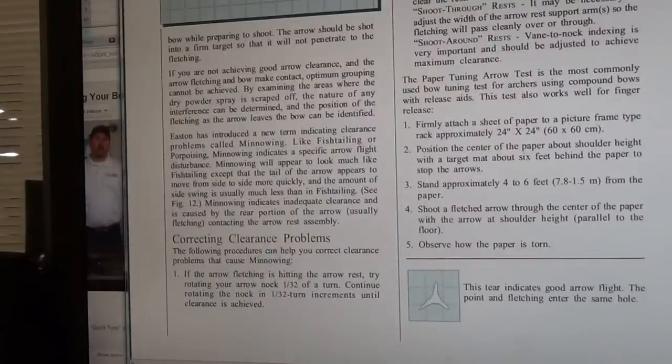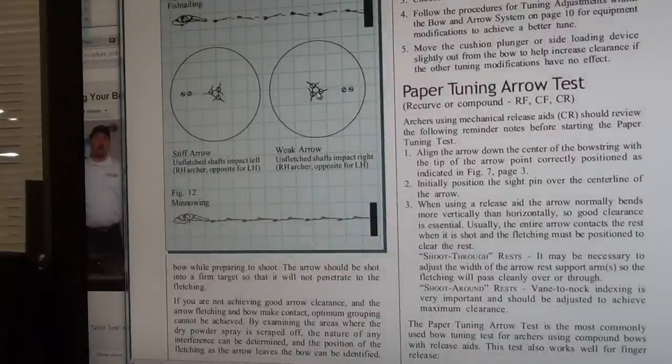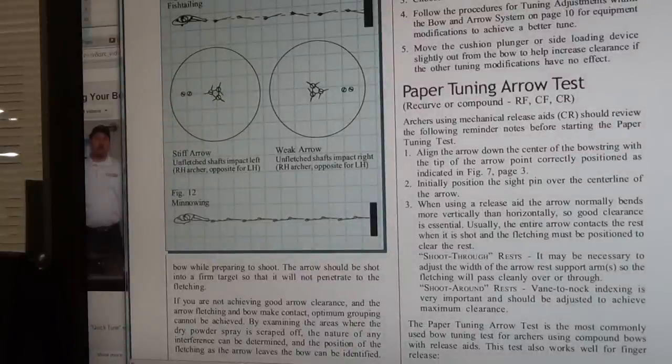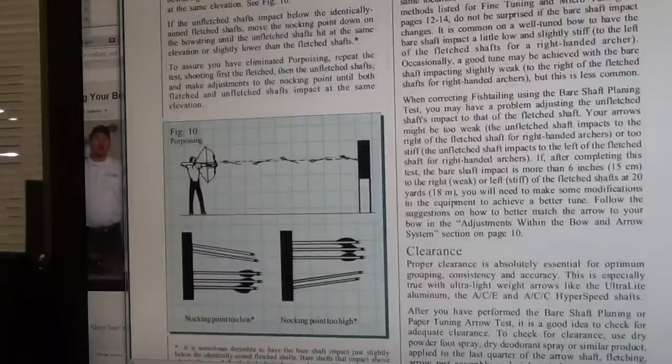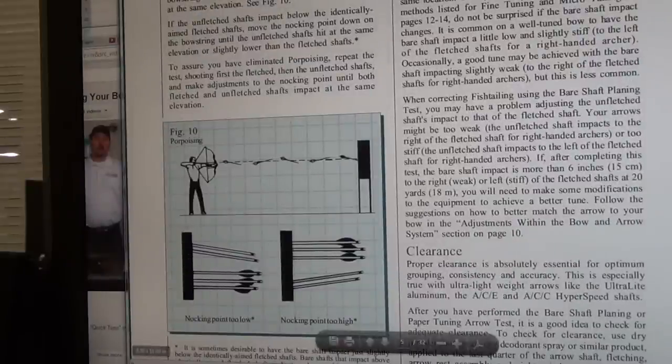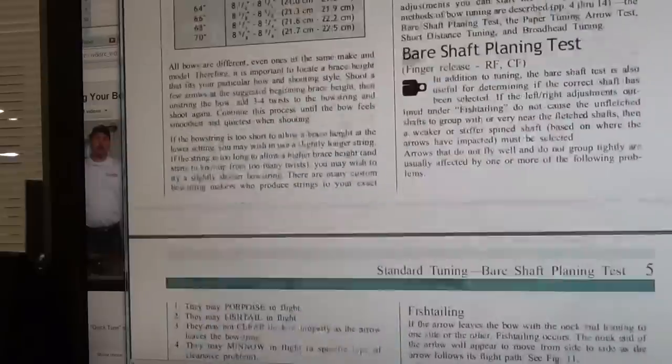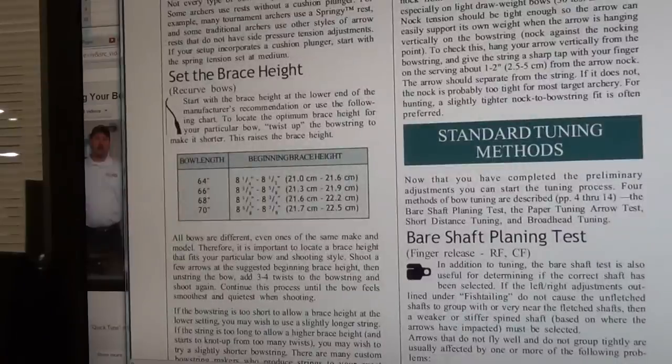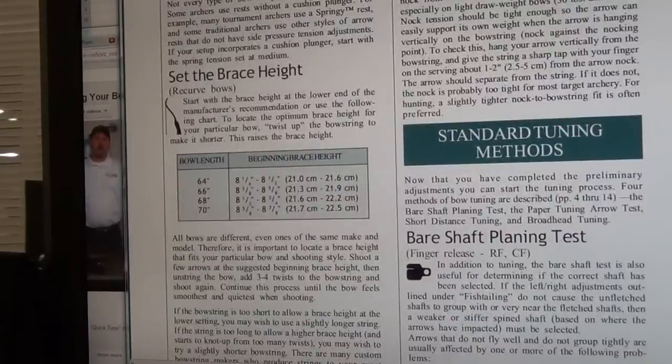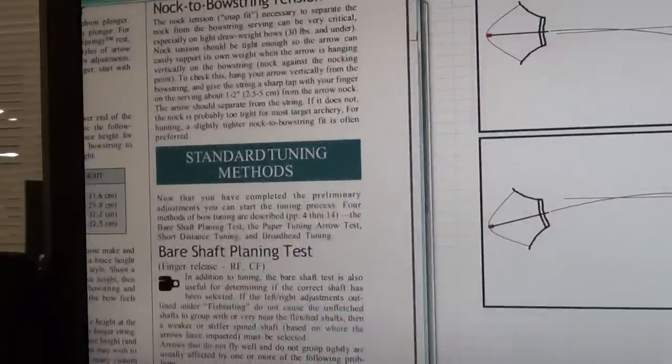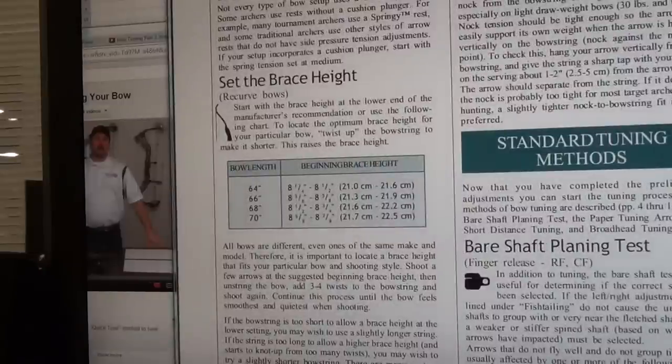if your arrows are doing, broadheads versus field tips, how you need to adjust it. If you look at the angle your arrows are going into the target, fletched versus unfletched, talks about fishtailing, porpoising, and all this other stuff and how you need to change the nock height. Getting your bow to do this and having the sight adjusted for everything else, it just leads me to believe that it's a little confusing.